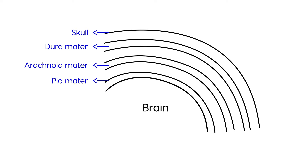As you can deduce, subdural hematoma is a collection of blood beneath the dura, in that area right here. This can be easily seen on a CT scan, and we'll talk a little bit more about that later.